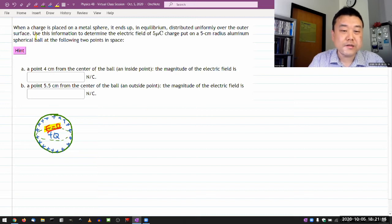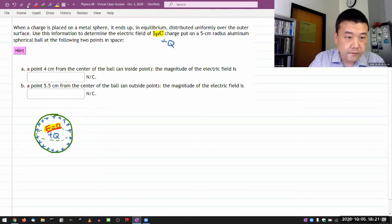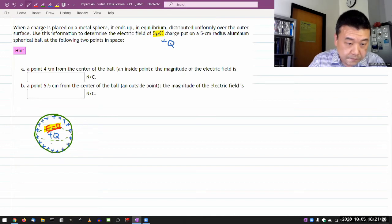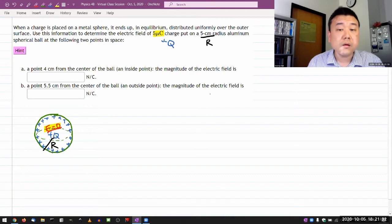And it says, use this information to determine the electric field of five microcoulomb charge. So this is my cue on a five centimeter radius. So I have radius R, five centimeter radius, aluminum spherical ball at the following two points in space. Part A is 0.4 centimeter from the center.